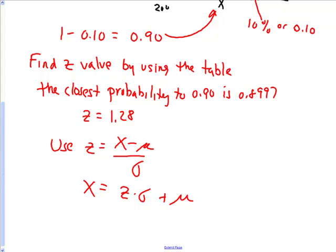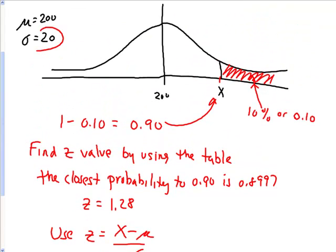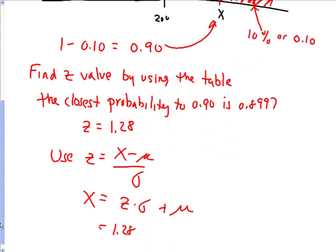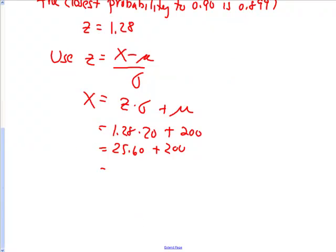So z is one point two eight. Remember from before that our standard deviation was twenty, and our mean was two hundred. So one point two eight times twenty is twenty five point six zero. Add that to two hundred, and we get two two five point six zero.